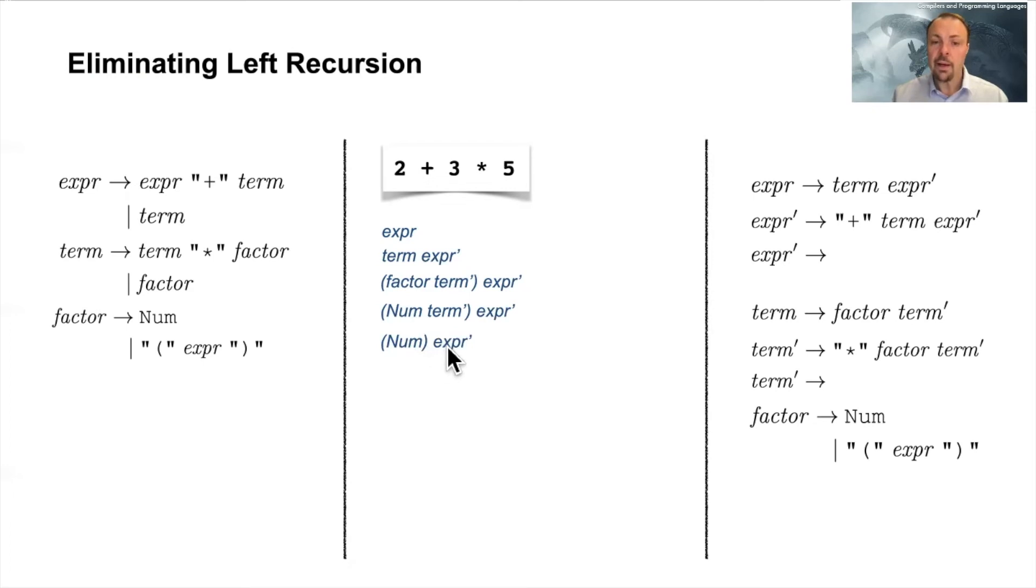Okay, we got this one, the num, and now we are going to expand the expression prime. Expression prime got a plus here term, and so this is the only option because we don't want to have the empty one, we need to get this plus. So we replace it with this one, and then we can expand with the term. So term, we only have this option, so we get this factor term prime. This factor goes down to a number because that's the only thing that we want to have here, because we do not have any parenthesis.